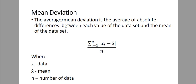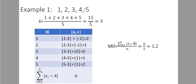According to the definition, it's the differences between the data and the mean, using absolute value. 1 minus 3 is negative 2, but the absolute value of negative 2 is 2 — absolute value always makes the result positive. 2 minus 3 gives absolute value of negative 1, which is 1. 3 minus 3 is 0. 4 minus 3 gives absolute value of 1, which is 1. 5 minus 3 gives absolute value of 2, which is 2.